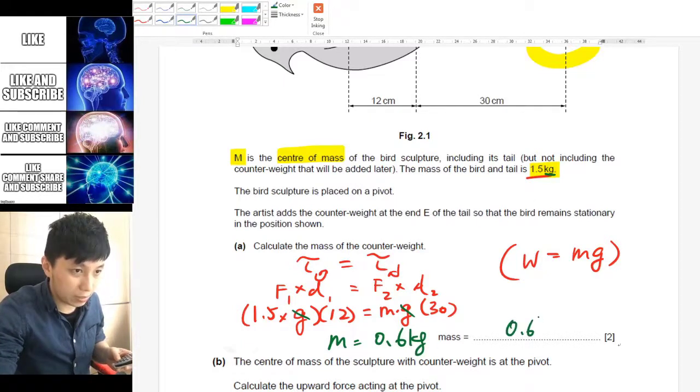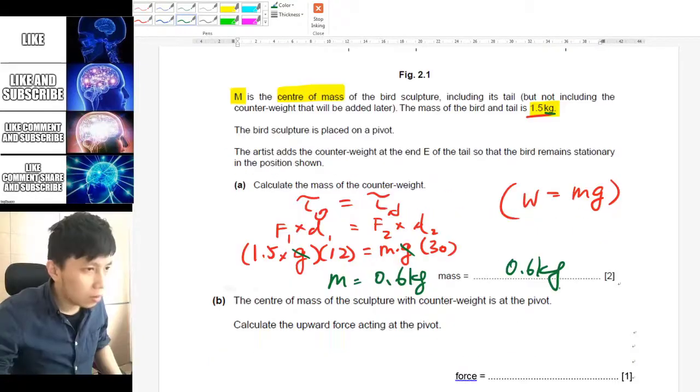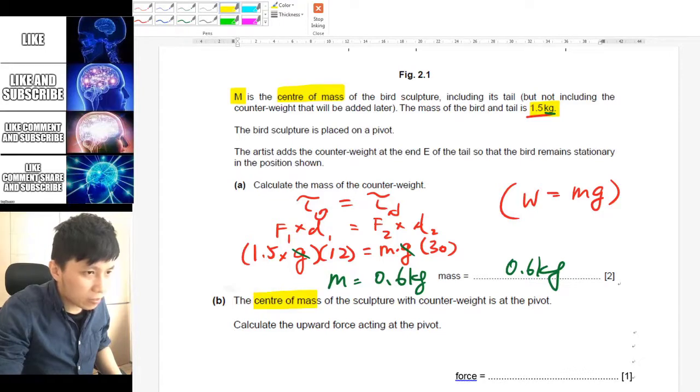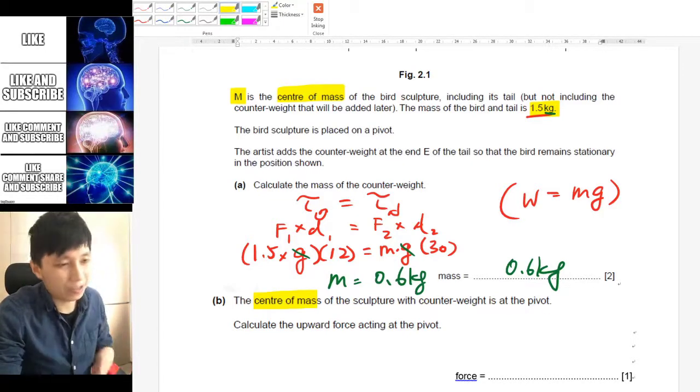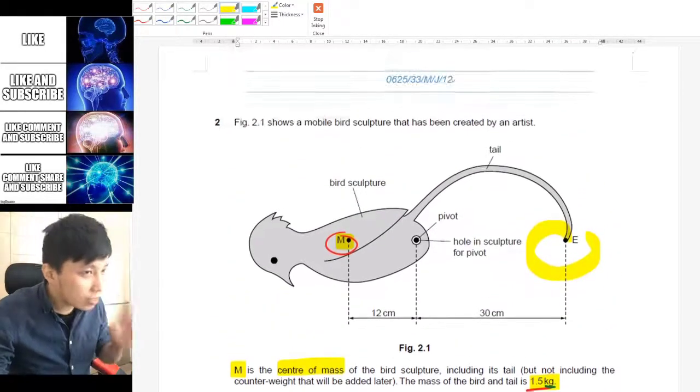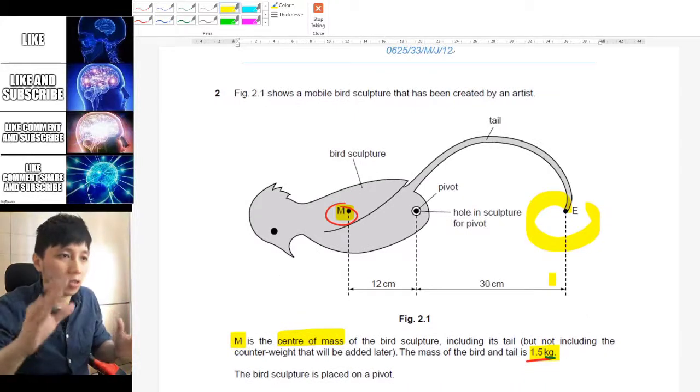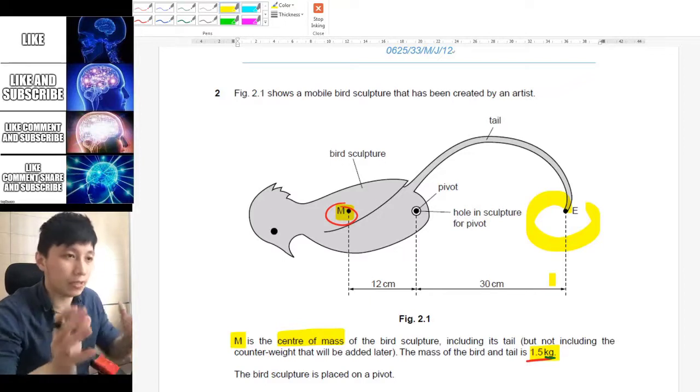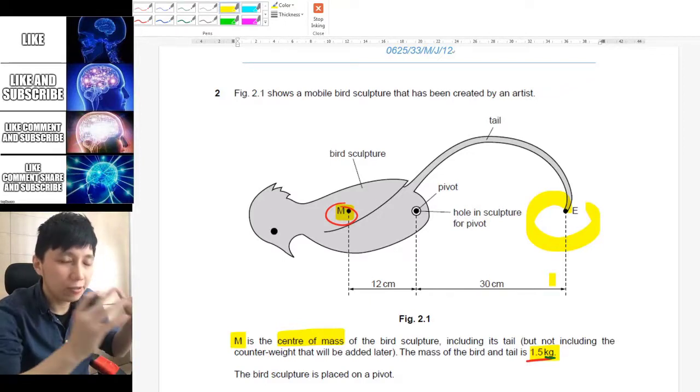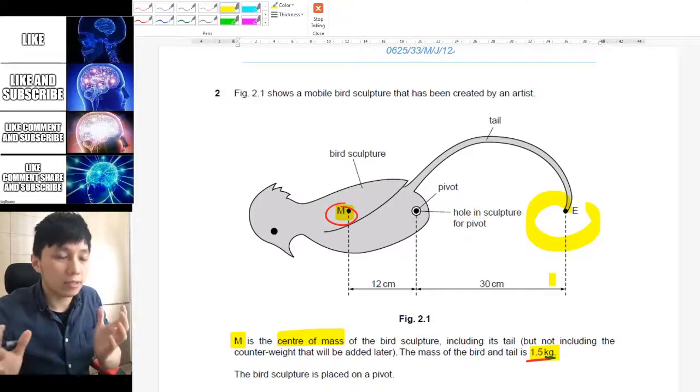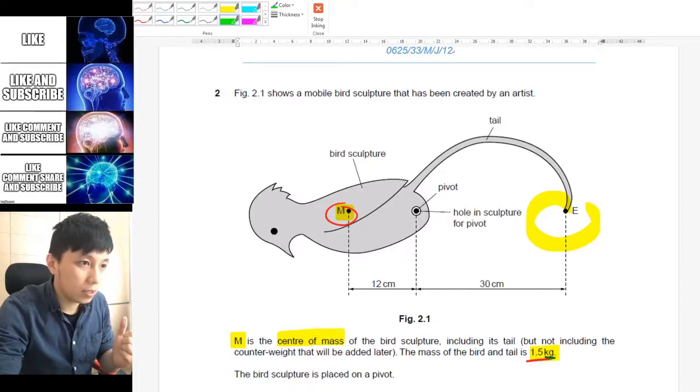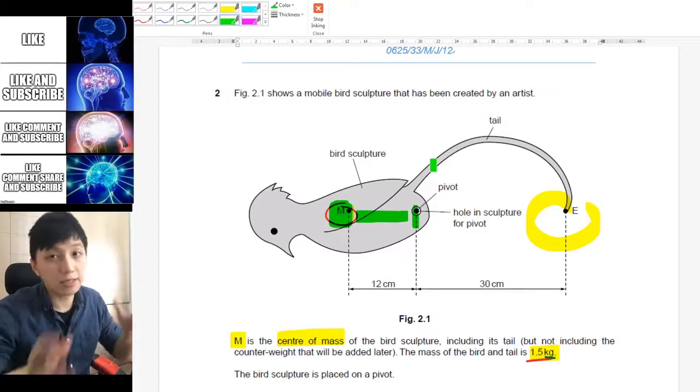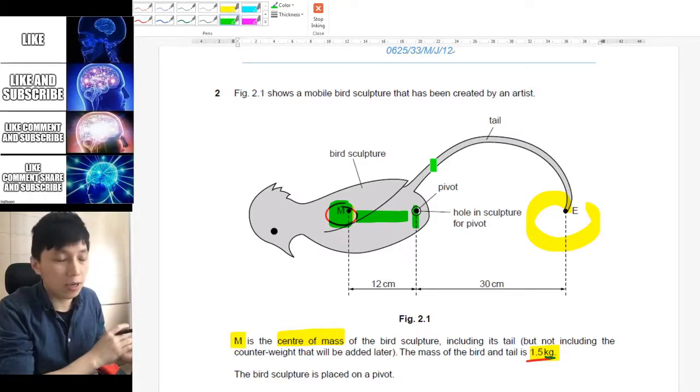Part b is that now the center of mass of the sculpture with the counterweight will be at the pivot. So this is the reason why the whole sculpture will be able to maintain balance—because after you add the counterweight it will shift the center of mass from here to the pivot so that it will become stationary.